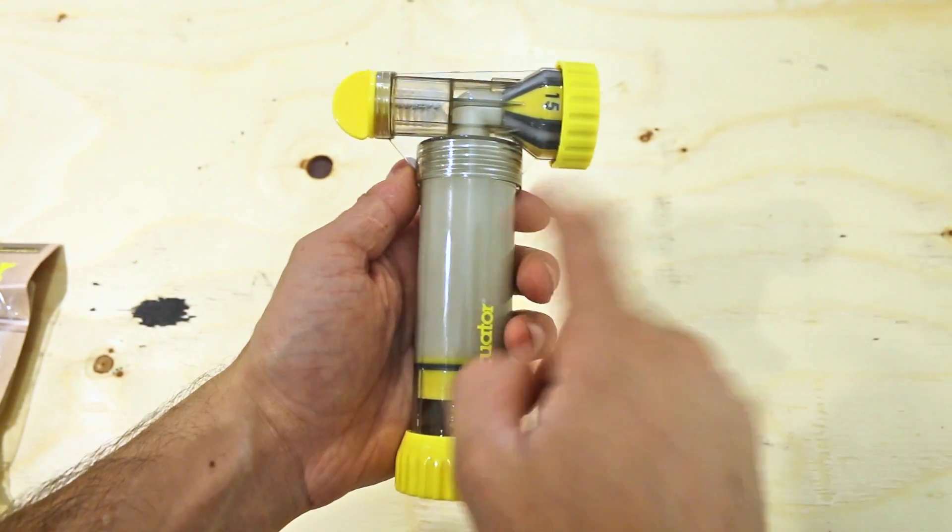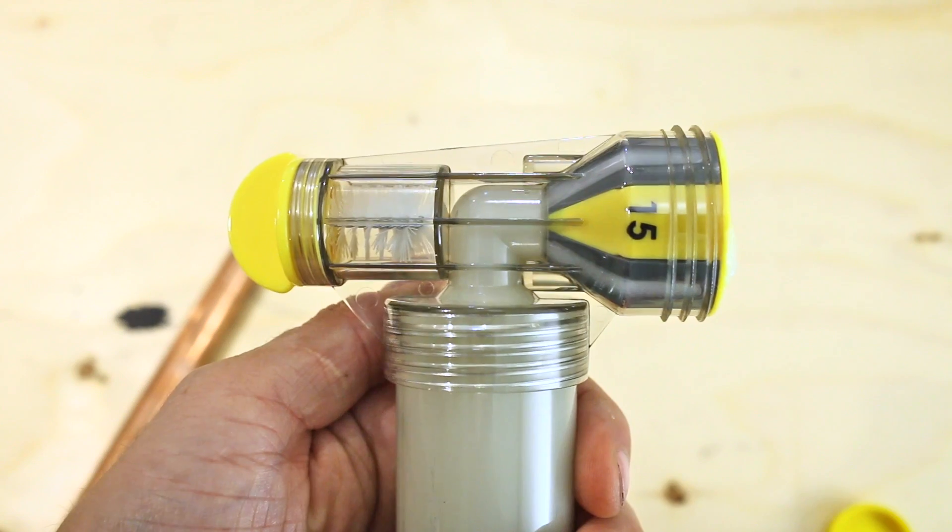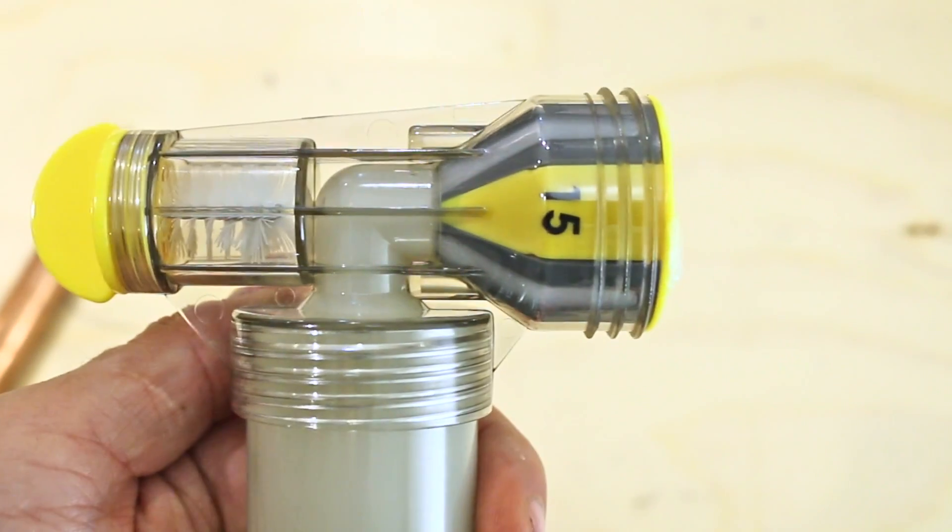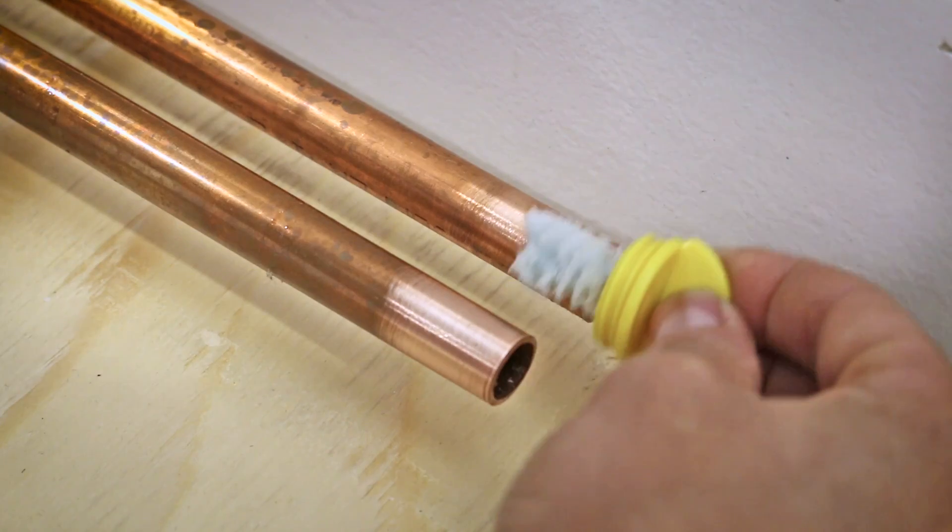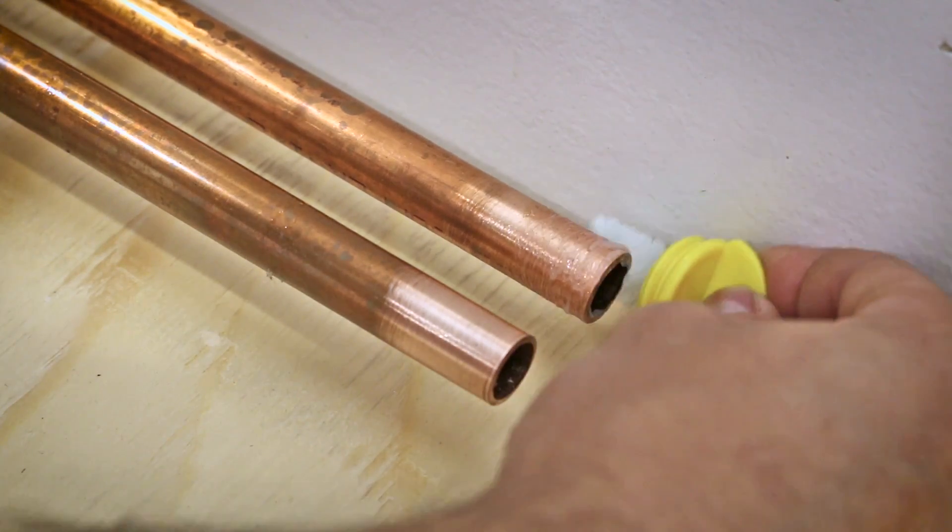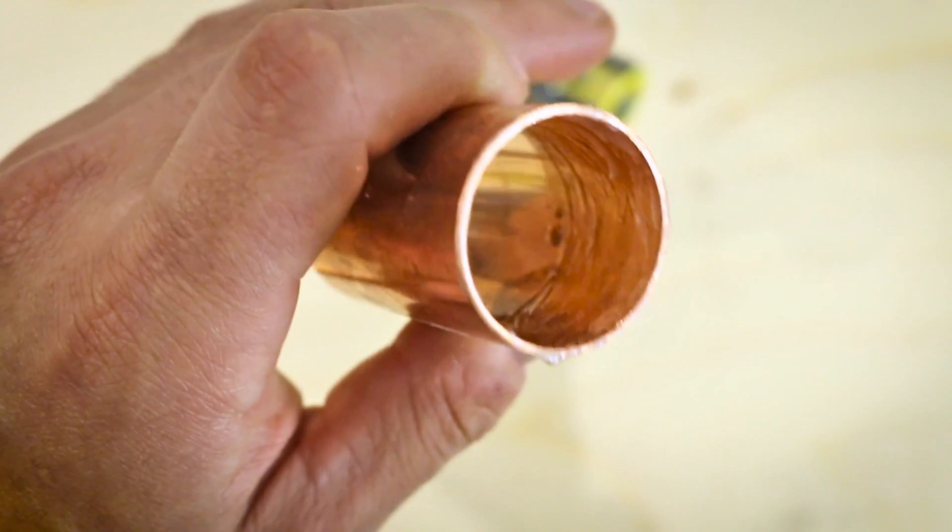The body is made of a clear solid plastic which indicates when you're close to needing a new refill. At the top is the actual dispensing head on one side and a flux applicator brush on the other. The applicator is made for hard to reach areas where the tool can't reach. It's also used for fluxing inside of fittings if needed.